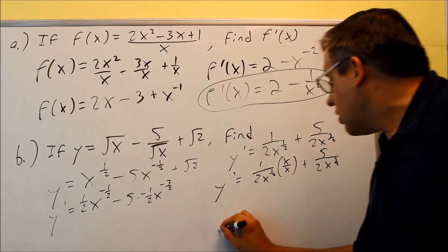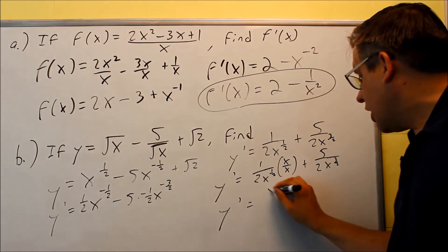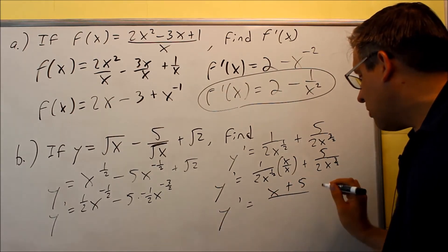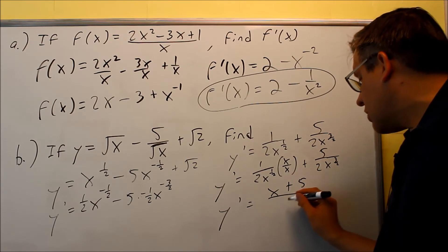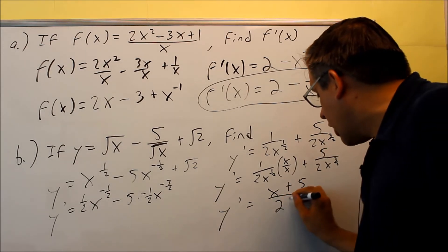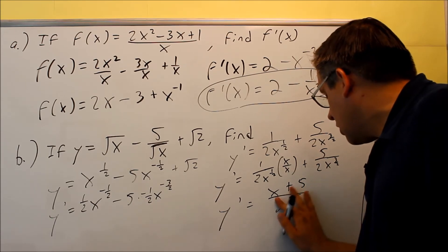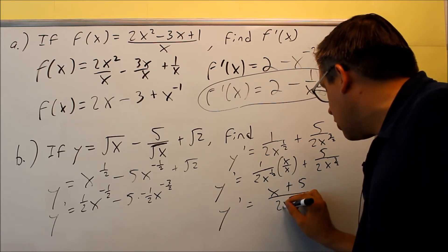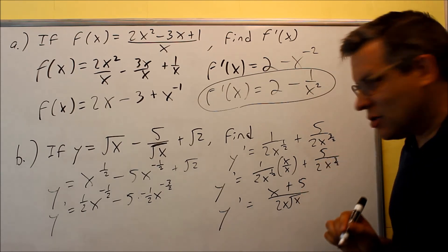And then if you do that one, that step, then you're going to get x plus 5 on top. On the bottom, you would get 2x to the 3 halves. Here's another way you can write that. If you wanted to write it with roots and radicals, you could write it this way. You could do 2x times the square root of x because technically that's what I have going on down here.